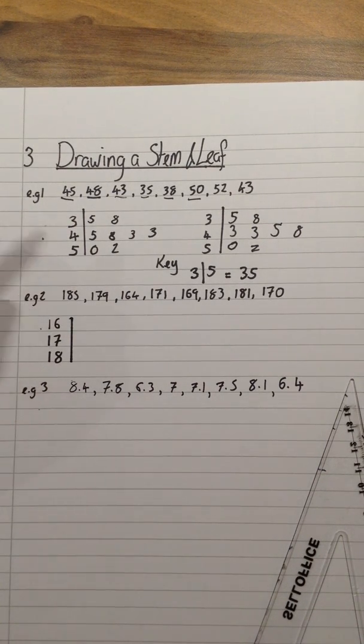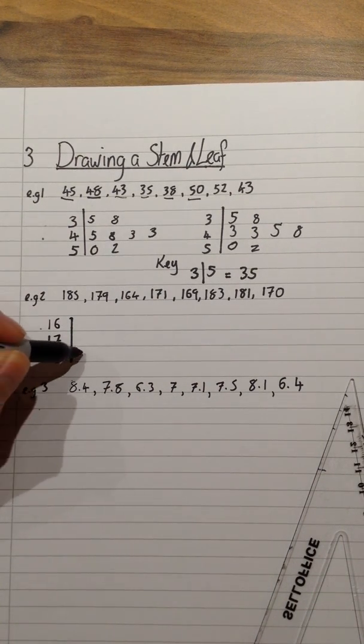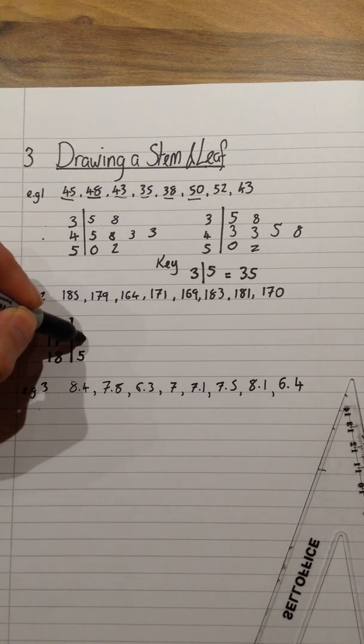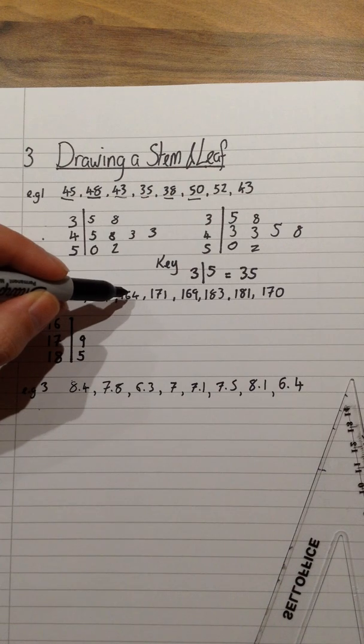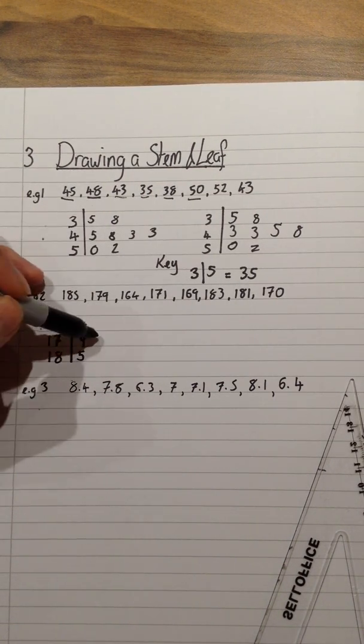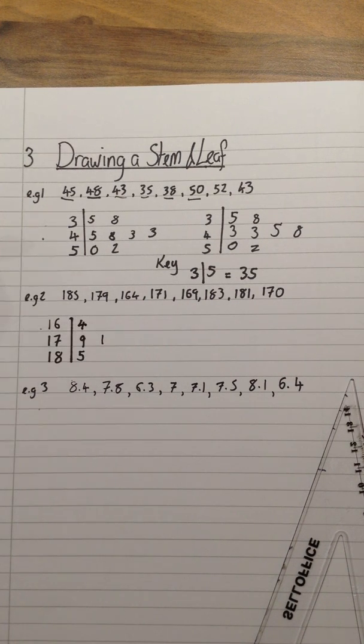That little ruled line just there. So we've got 185 first. So that goes on this bottom row. We simply put this unit on the end. That's the leaf. We've then got 179. 9 onto that row. 164. 171. So going back onto the middle row. 1 just there.